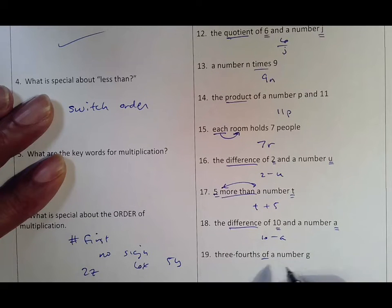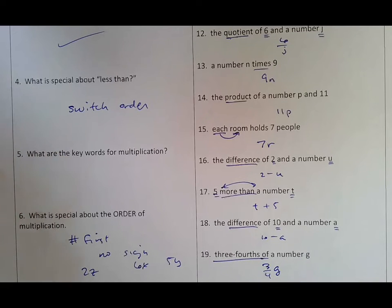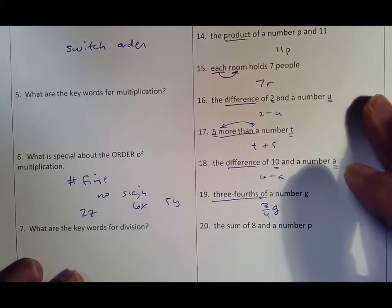Three fourths of a number g means take the three fourths, multiply it by g, because remember that of means multiplying in that situation. Three fourths of a number g means take three fourths times g.